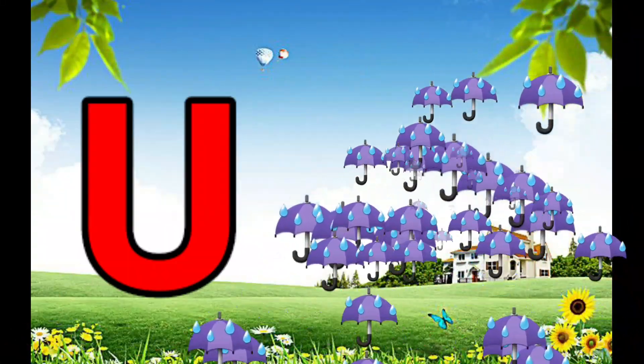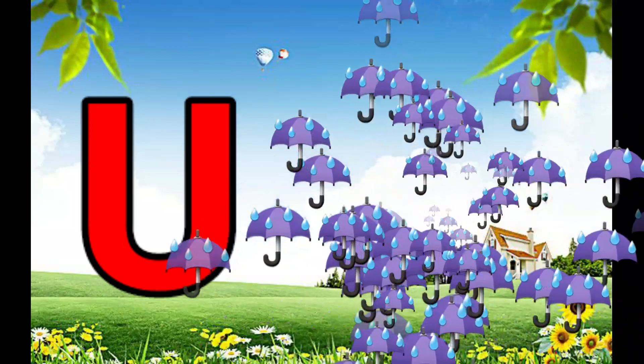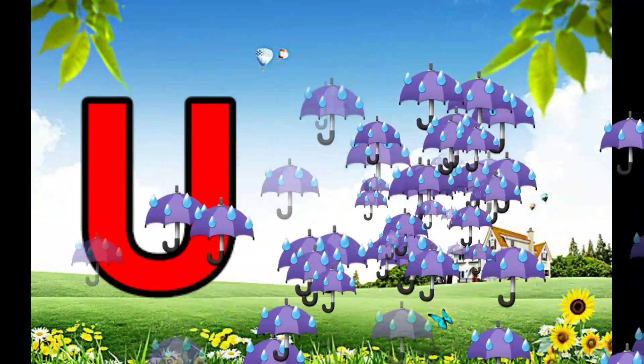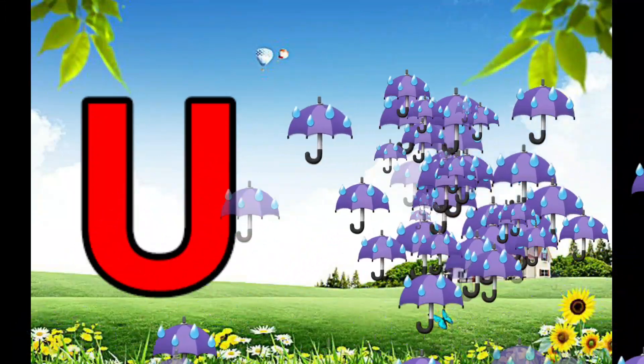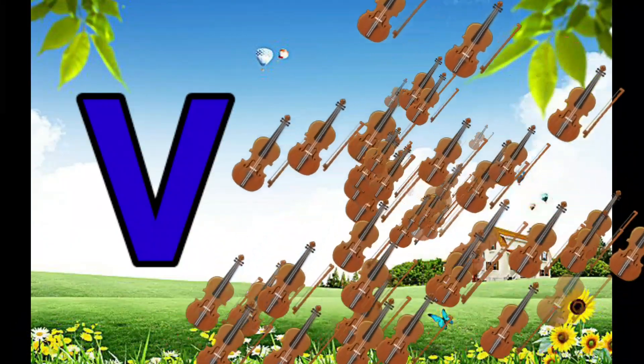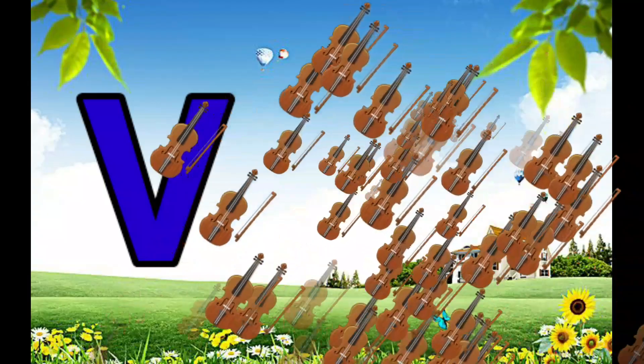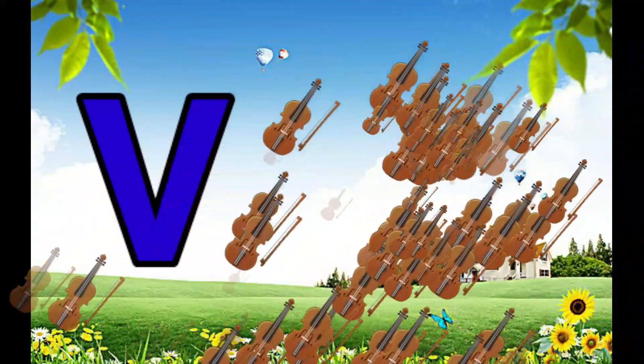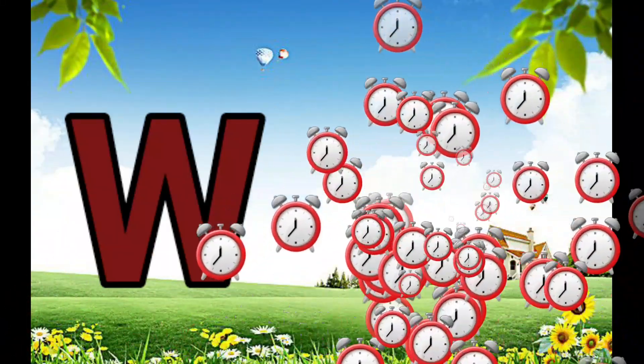U is for Umbrella, U-U-Umbrella. V is for Violin, V-V-Violin.